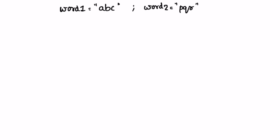Using the same strings as example one: word1 is 'abc' and word2 is 'pqr'. We start by finding the lengths — both are three. Since the lengths are equal, there's no need to extract remaining characters; we can directly form the merged string taking characters equally from both words. I'm going to use a StringBuilder and then convert it to a string since that's the return type. First I append 'a' from word1, then 'p' from word2.